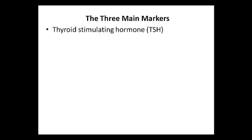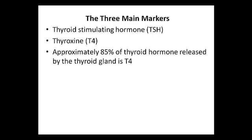There are three main markers I'm going to focus on in this video. This includes thyroid stimulating hormone, or TSH, and this is a pituitary hormone that affects the secretion of the thyroid hormones. Thyroxin, also known as T4, is a type of thyroid hormone. Approximately 85% of thyroid hormone released by the thyroid gland is T4, with approximately 15% being T3.